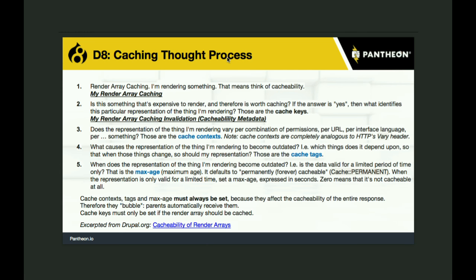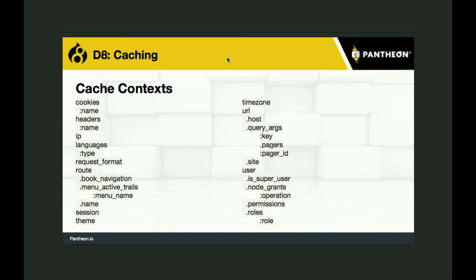Cache contexts — when the thing you're caching is going to change because of language, cookies, a route, a session, a changed theme, something in the URL, or something different about the user, you can tag your render array to say my cache context is to change on user. Then Drupal knows if the user has changed, it needs to render that piece individually again for this user and will not accidentally send the cached version from the previous user. If you're tagging all of your cached things correctly, you can have this kind of granularity throughout your caching in Drupal 8.